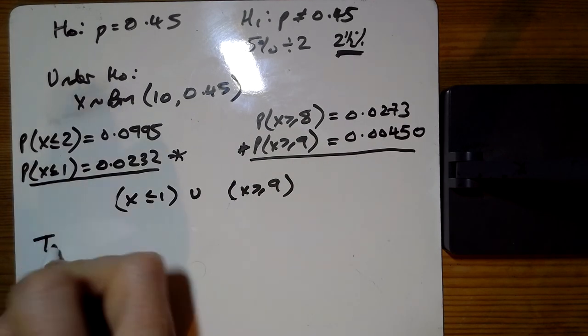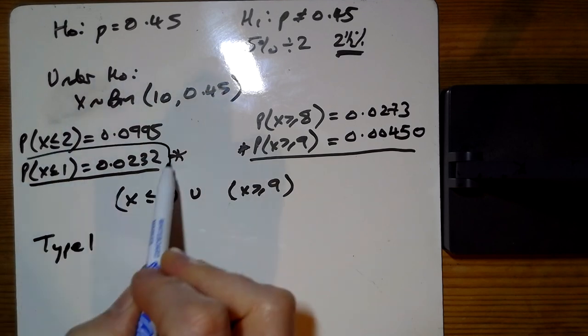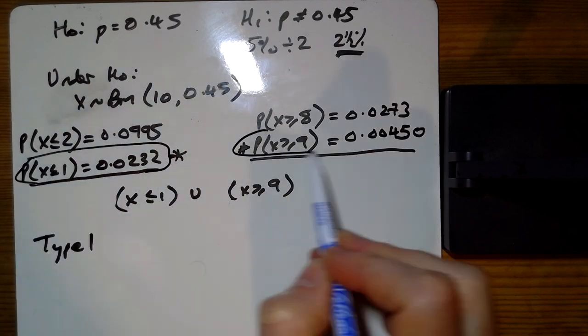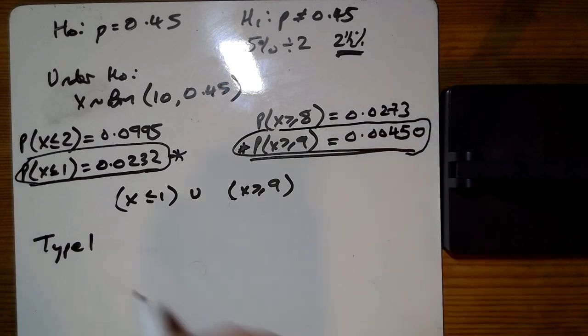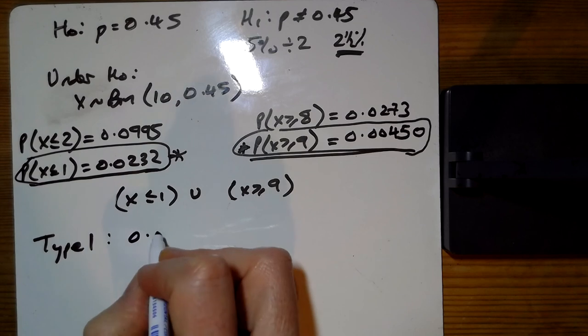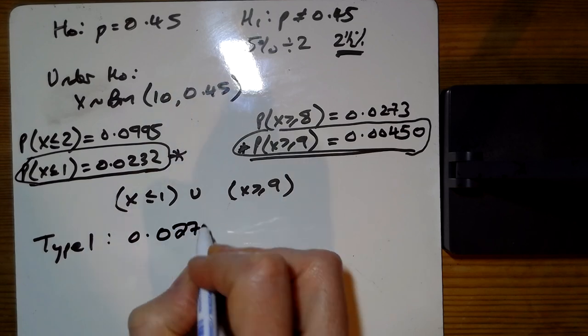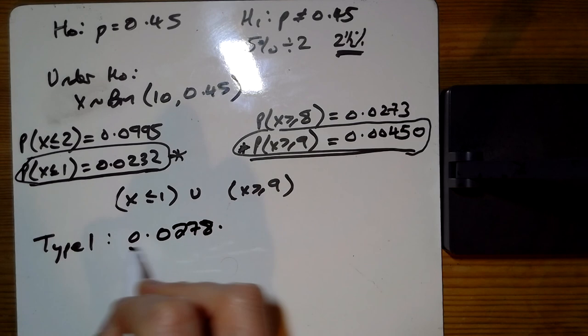Now the probability of a Type 1 error in this case is the probability of making the wrong decision here. We've been doing these before in the first year - that's just the value of the test, so these two things added together, which is still quite low, 0.0278 I think we've got there if we add those two things together.